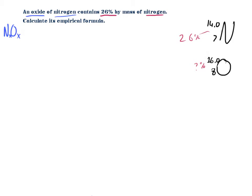Since we don't have the percentage composition by mass of oxygen yet, I'm going to figure that out. Since this is a percentage composition, the whole molecule is going to be 100%. So if we take away the percentage that nitrogen contributes, what's left is the percentage that oxygen contributes. So 100 minus 26 gives me 74 - so 74% is what the oxygen contributes.